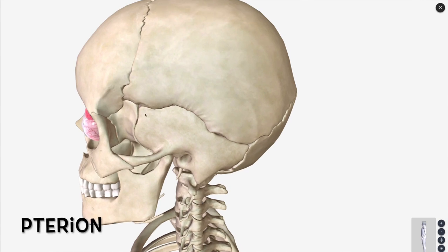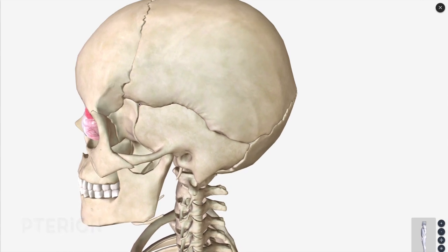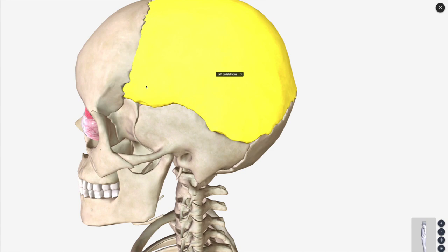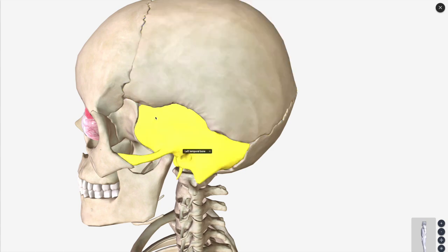The pterion is one of the thinnest and weakest parts of the skull, and it's essentially where your frontal, your parietal, your temporal and your sphenoid bone are all going to join together.